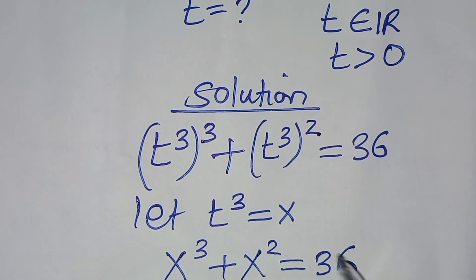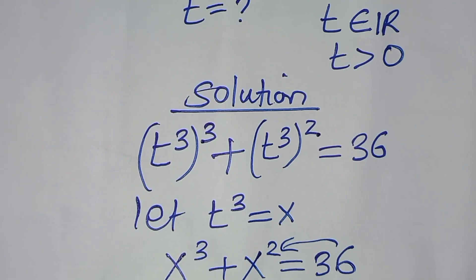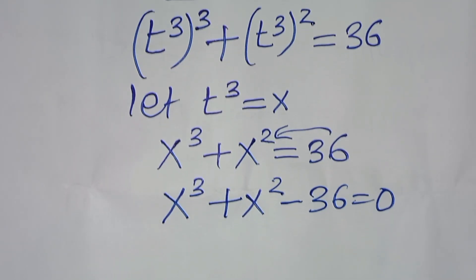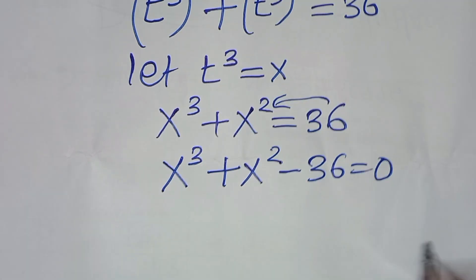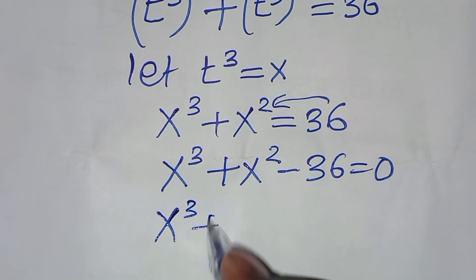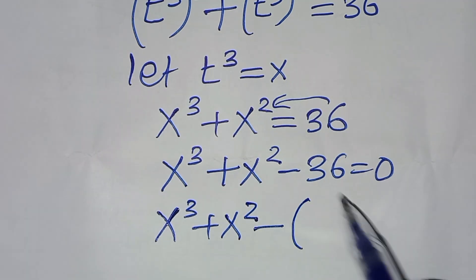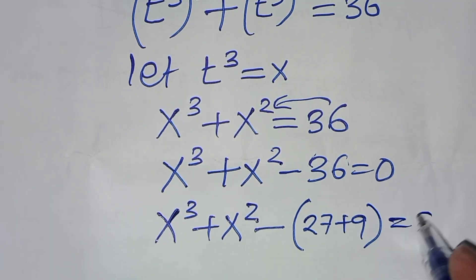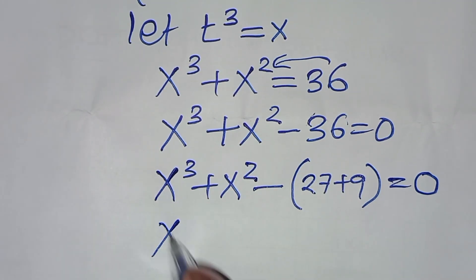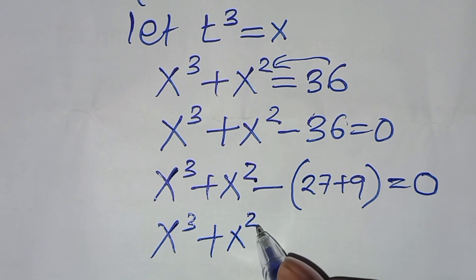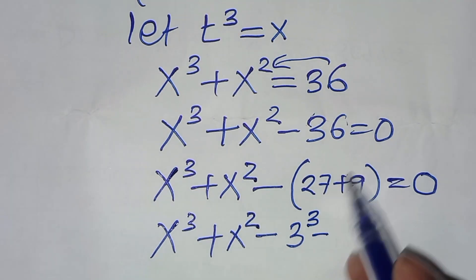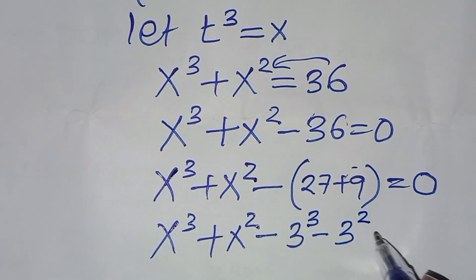Taking 36 to the left hand side, we have x to the power 3 plus x to the power 2 minus 36, this is equal to 0. We can express 36 as 27 plus 9, giving us x cubed minus 27, which we can express as 3 to the power 3, minus 9, which we can express as 3 squared, this is equal to 0.